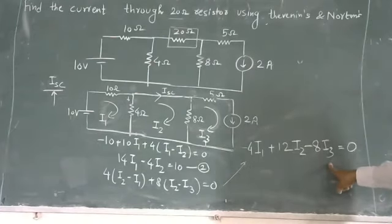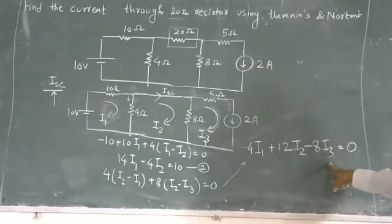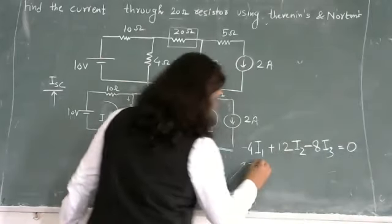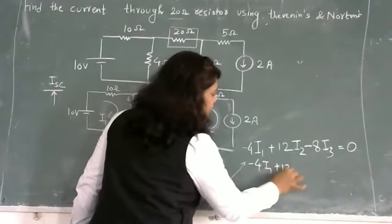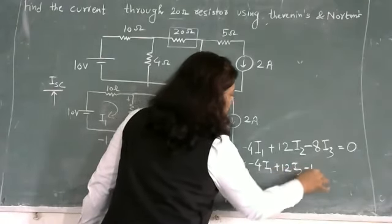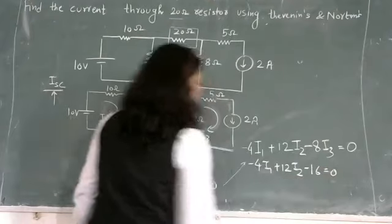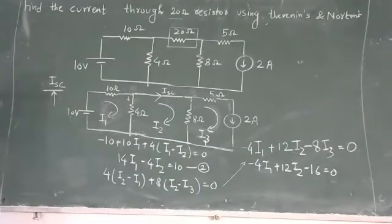i3 value is 2A, so minus 4i1 plus 12i2 minus 16 is equal to 0. Now take this 16 to the other side.